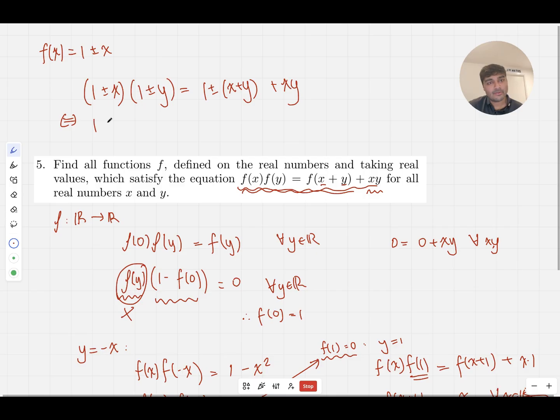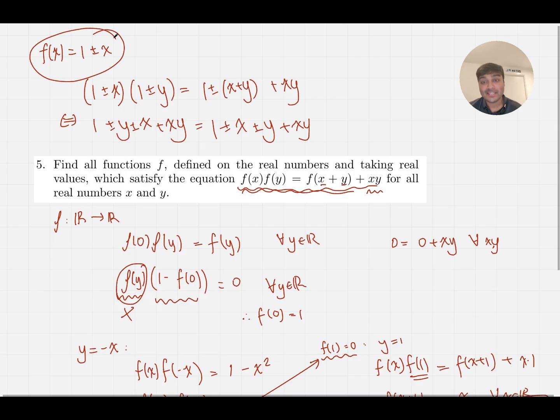If I substitute that back into this, I get (1 ± x)(1 ± y) = 1 ± (x + y) + xy. And I just need to verify that this equation is true for all real values x and y. If I expand this, I get 1, then ± y ± x, and then ± x times ± y, that's always going to be plus xy. Even if it's plus and plus, that's positive times positive is positive. Negative times negative is also positive. So I get this. And we can see that this is true. If I expand this, I get the same thing on both sides. So both of these indeed are valid solutions. And so there are only two functions f that satisfy this equation, namely f(x) = 1 + x and f(x) = 1 - x.